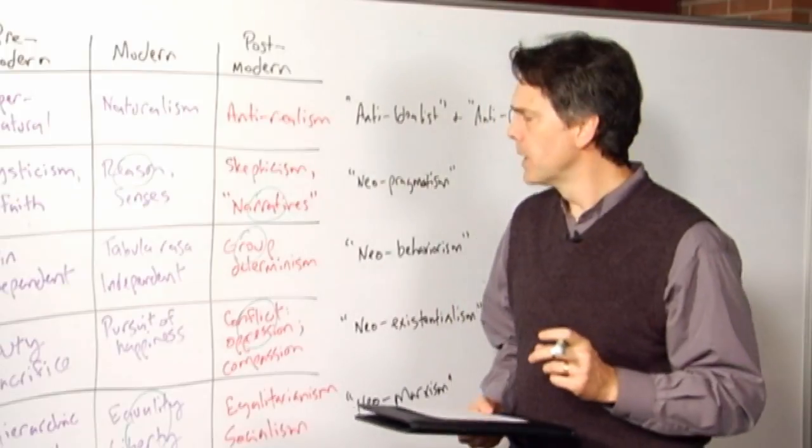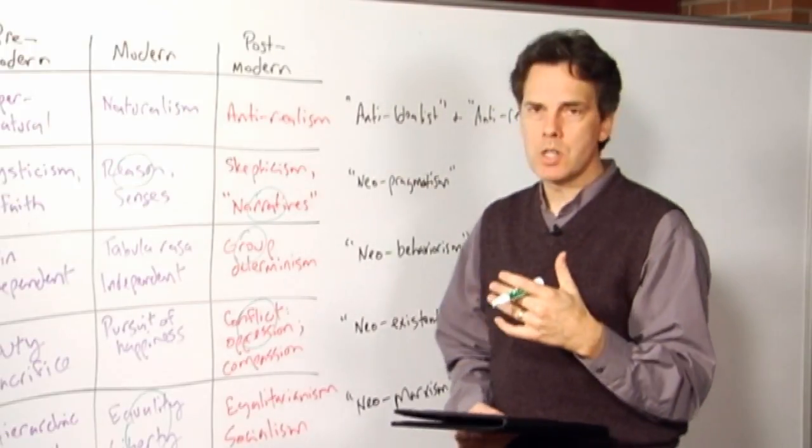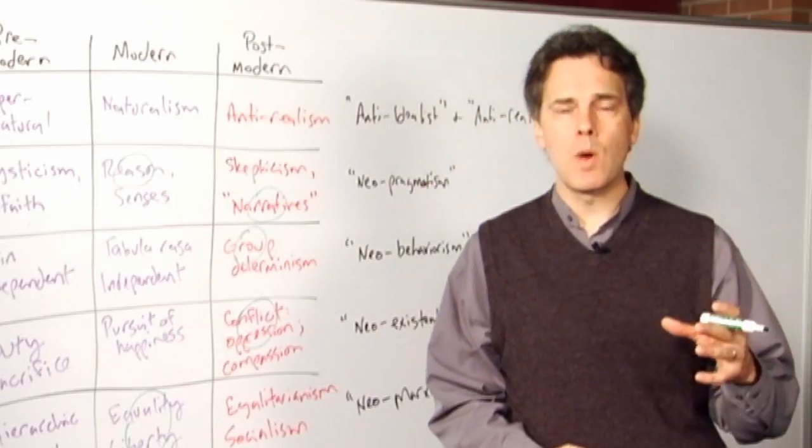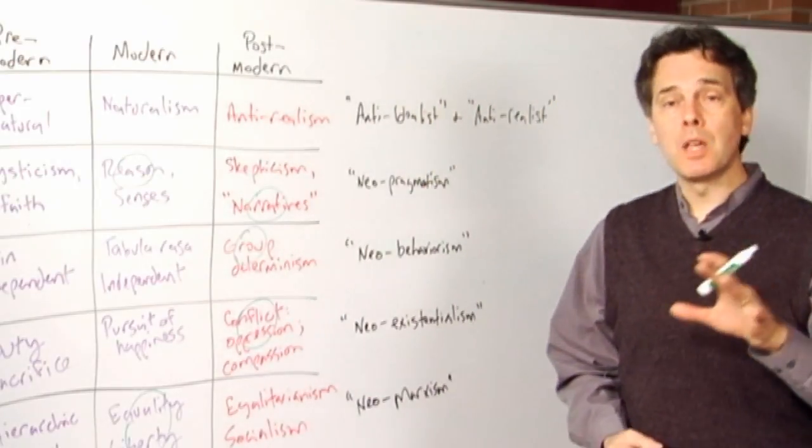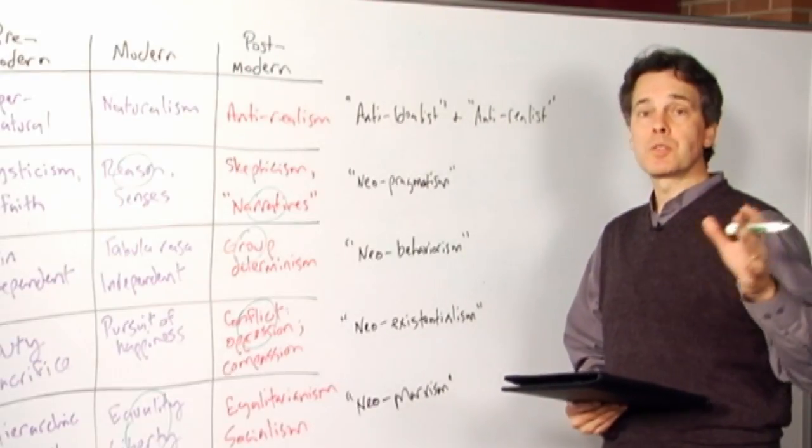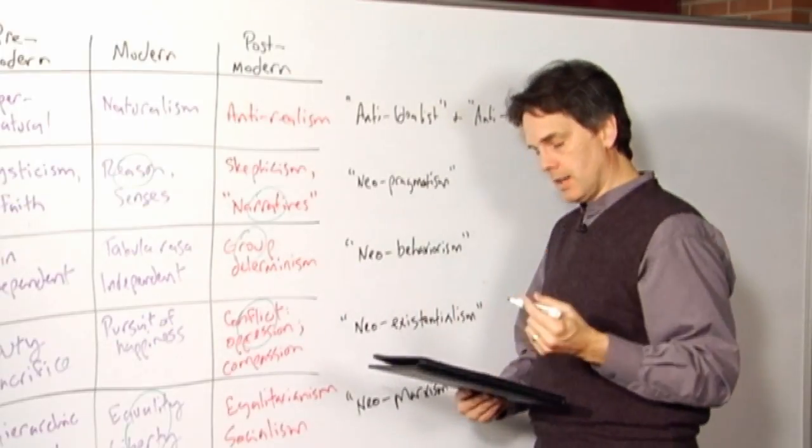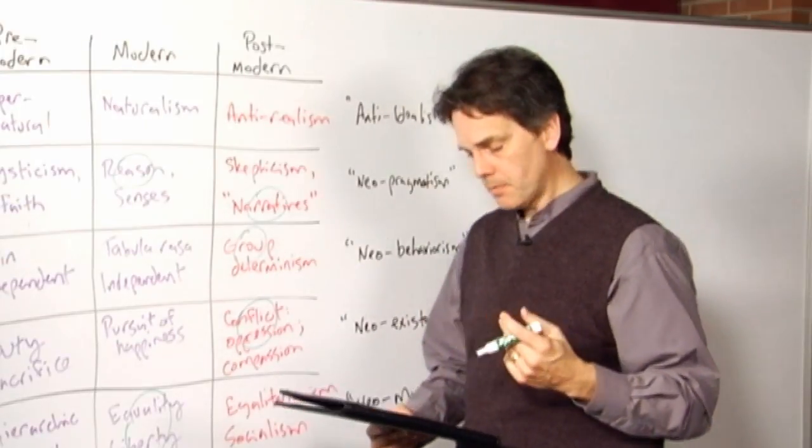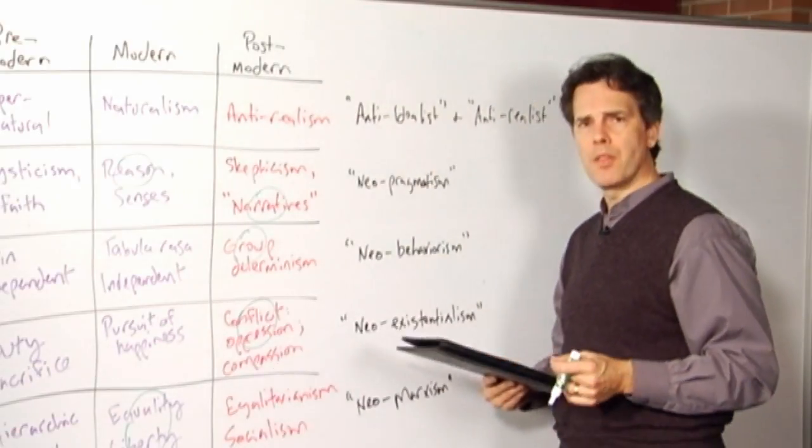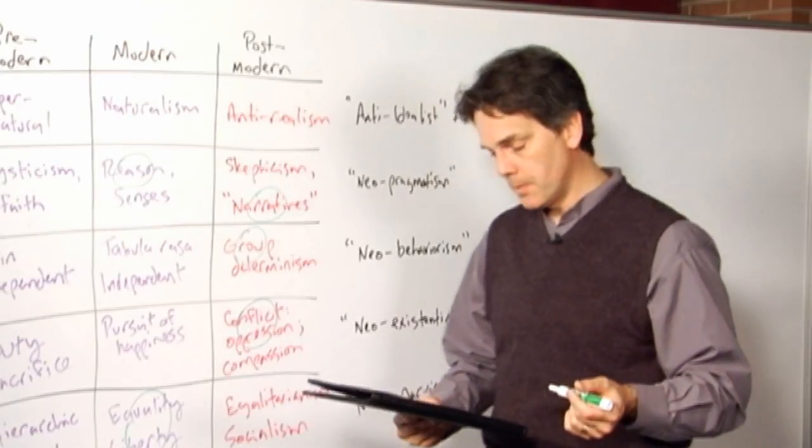But also notice what he says about Saddam Hussein, that particular dictatorship. His situation is a constructed situation. It's not that he made certain choices and the Iraqis made certain choices. Rather, they are puppets being controlled by Western governments, by Western big companies, and so their situation is something that is imposed on them. They are determined, they are constructed by the international political and economic environment that they find themselves in.